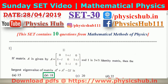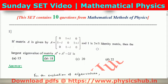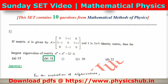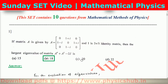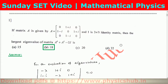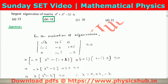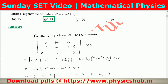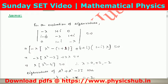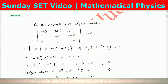The first question: if a matrix A is given, and I is a 3×3 identity matrix, then the largest eigenvalue of the matrix A⁴ + A² − 2I is what? First of all, we have to find out the eigenvalues of the parent matrix A. To find the eigenvalue of this matrix, we perform the standard calculation, and from here we get the eigenvalues as 0, +2, and −2.